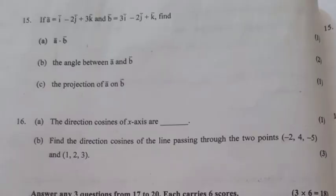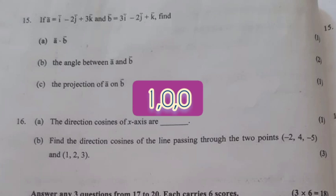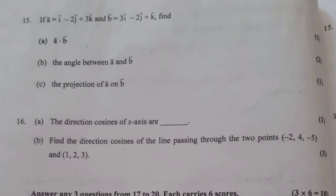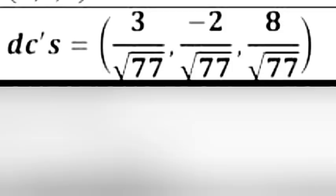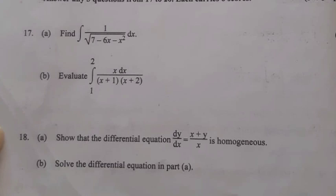Question 16A: The direction cosines of the x-axis are: 1, 0, 0. Question 16B: Find the direction cosines of the line passing through the two points (-2, 4, -5) and (1, 2, 3). Answer: Direction cosines = (3/√77, -2/√77, 8/√77).